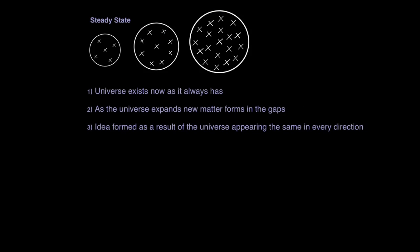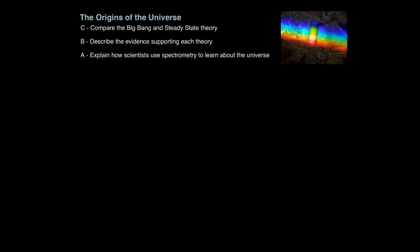The steady state theory assumes the universe exists now as it always has. The steady state theory assumes that space is expanding, but new matter forms in the gaps. The reason we considered this theory is because the universe appears the same in almost every direction. So you can see here that the universe is expanding, but in the gaps created, new matter appears. And that is how you compare the Big Bang and steady state theory.